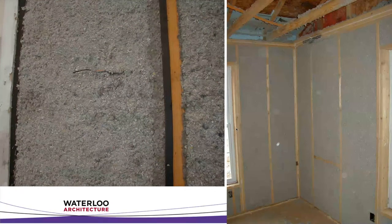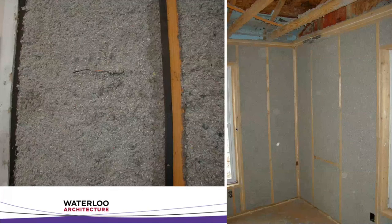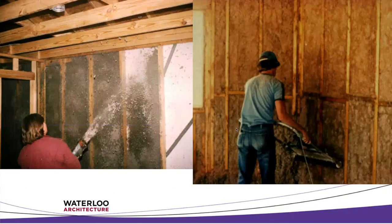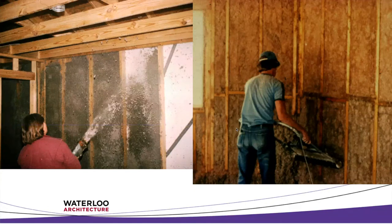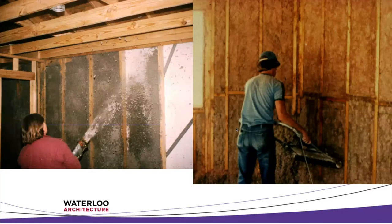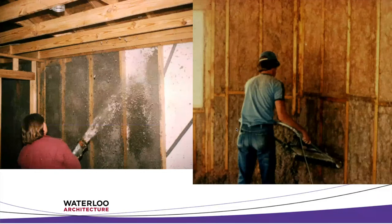Wet-spray cellulose adds a little water and glue and is sprayed into walls, filling irregular voids and accommodating irregular surfaces. A worker blows cellulose into stud walls on the left and scrapes it smooth with a rotating wheel on the right, vacuuming up the fallen material and blowing it back in. It's quite an effective process.